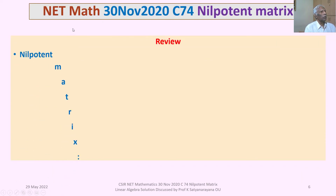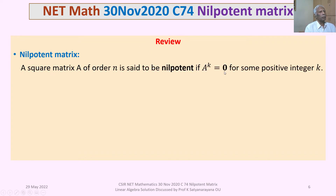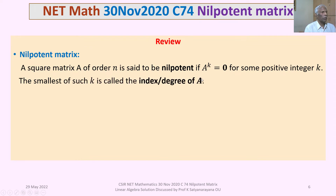We first review some definitions and results. What is a nilpotent matrix? A matrix A of order n is said to be nilpotent if A^k equals the zero matrix for some positive integer k. The least such k is called the index of A, or sometimes the degree of A.